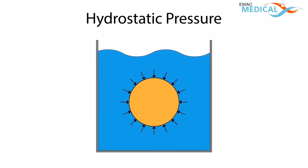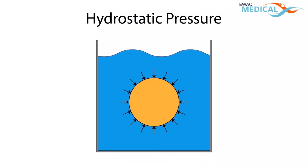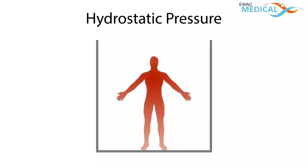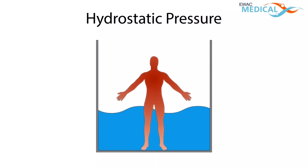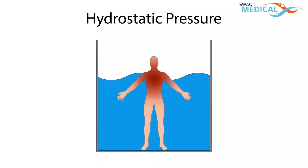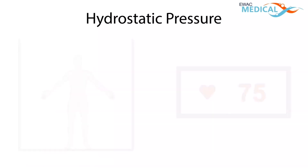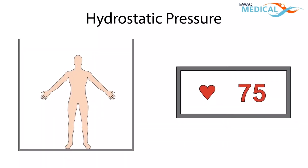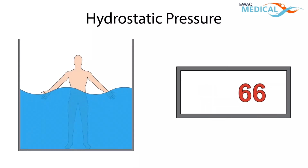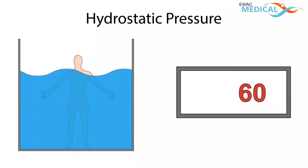Hydrostatic pressure. Water exerts a pressure on any object that is submerged — this pressure is called hydrostatic pressure. When the human body is submerged in water, hydrostatic pressure forces the blood to the central part of the body. Because the heart senses there is more blood available and therefore it can operate more efficiently, the heart rate slows down.